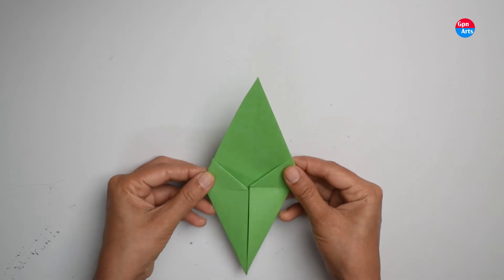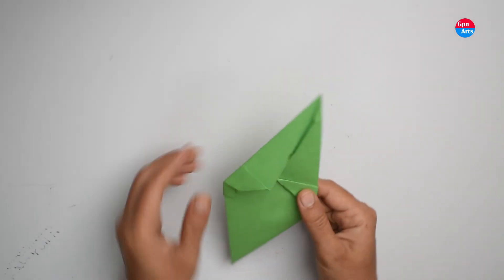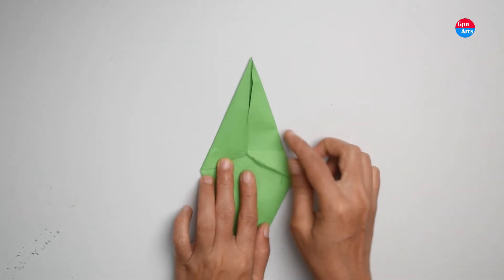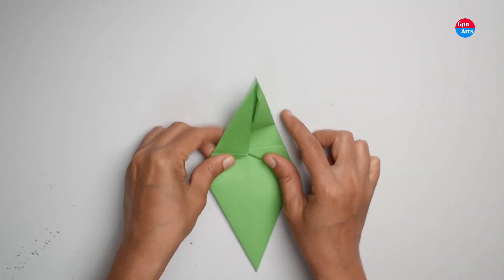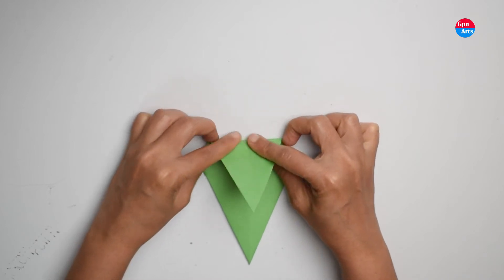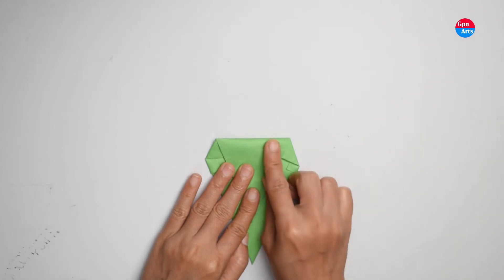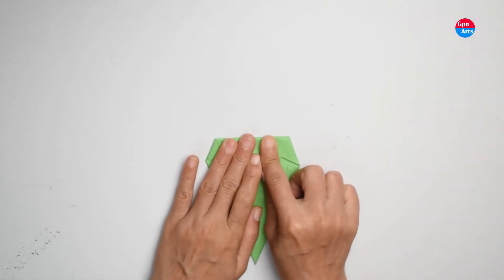Now you can see this straight line. Fold the paper at the bottom side and press here.